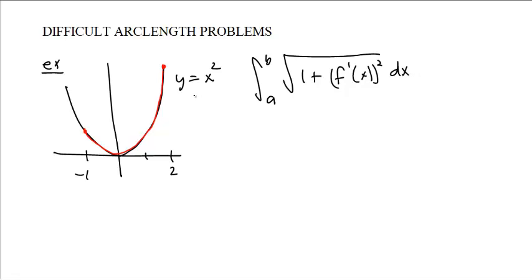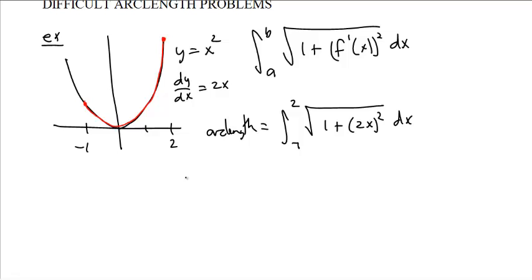So what is it? Your function is y equals x squared, so dy dx is 2x. And so our arc length is the integral from negative 1 to 2 of square root of 1 plus 2x, the quantity squared. And this is the integral from negative 1 to 2 of the square root of 1 plus 4x squared dx.